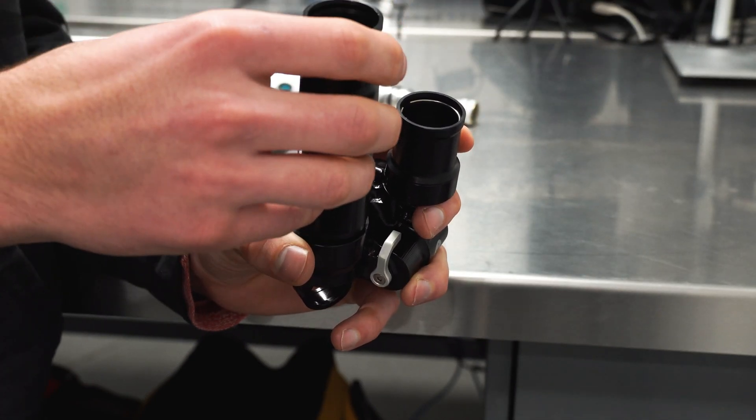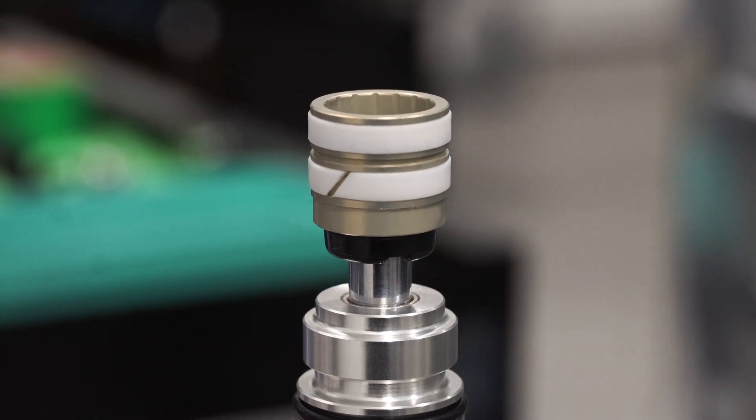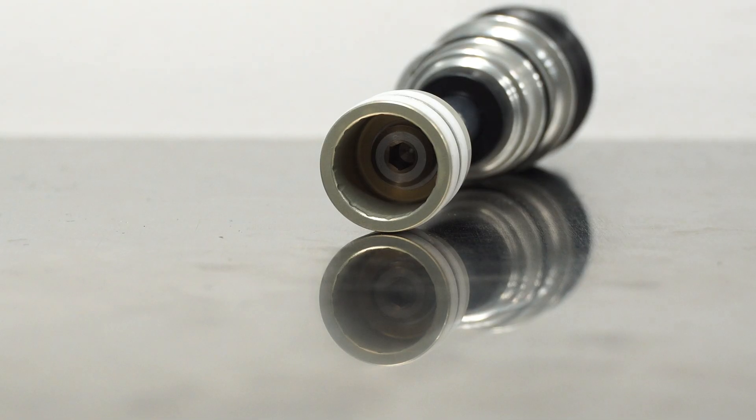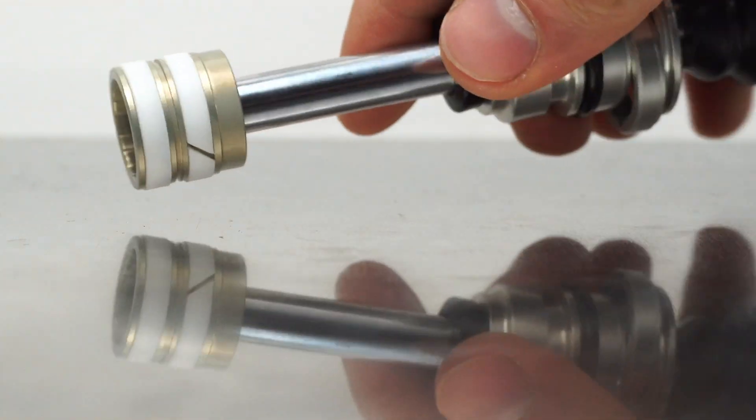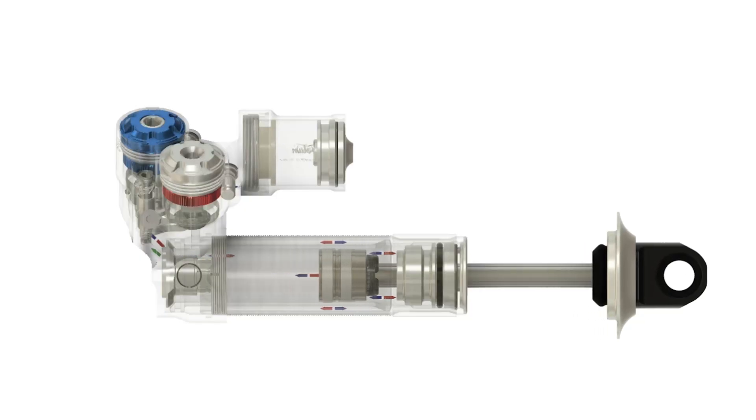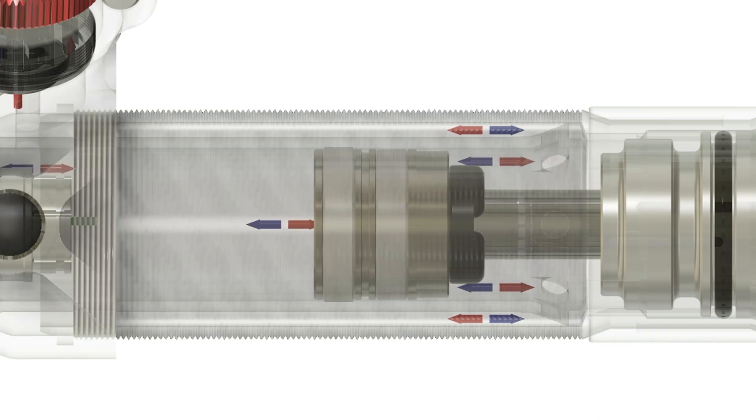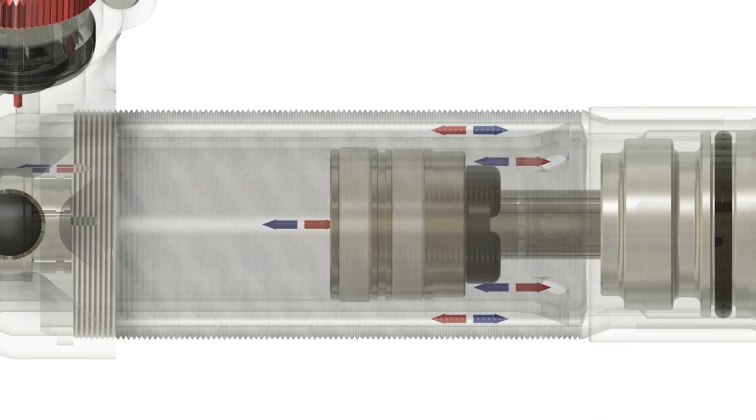Unlike other twin tube shocks that have hit the mountain bike market, it utilizes a solid 22 millimeter diameter main piston, meaning that no oil flows through the main piston at all. Instead, the full piston displacement is pushed up through the inner tube, around through the damping circuits in the reservoir bridge, then it recirculates between the outer tube and the inner tube, back behind the main piston.